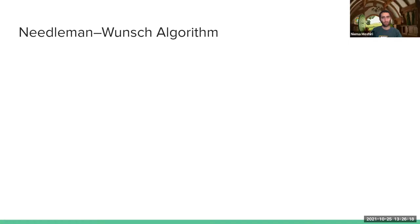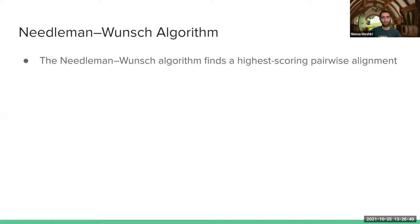We talked about what a pairwise alignment is and what the optimal pairwise alignment is. But obviously I don't want to try every single possible pairwise alignment, compute the score, and pick the maximum — that would take way too long. So the question is: how do I find the optimal pairwise alignment efficiently in the first place?